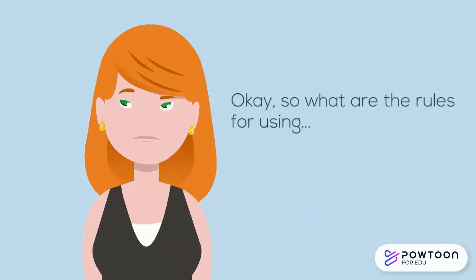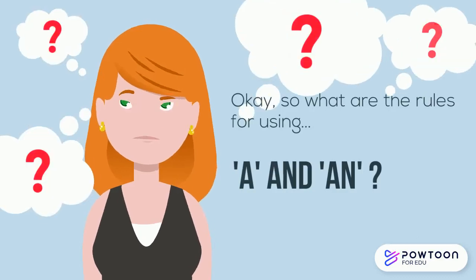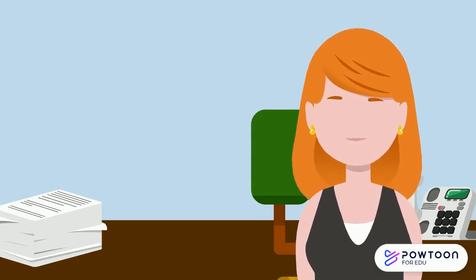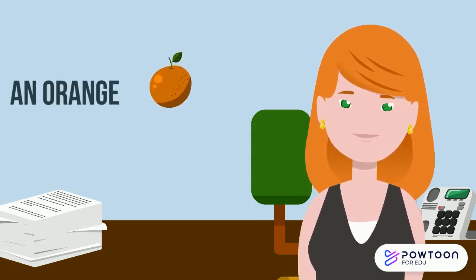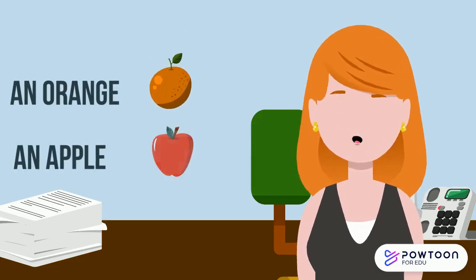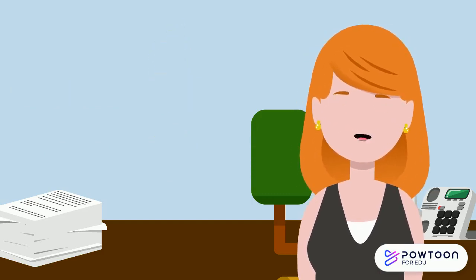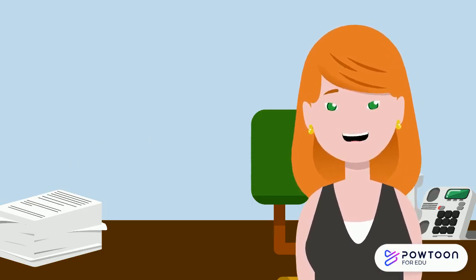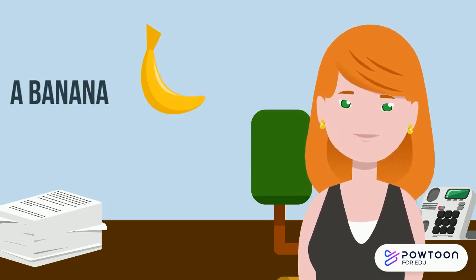So what are the rules for using A and AN? We use AN for words that start with a vowel, like an orange and an apple — orange and apple start with a vowel. We use the article A for words that start with a consonant, like a banana. Banana starts with a consonant.